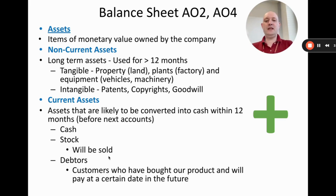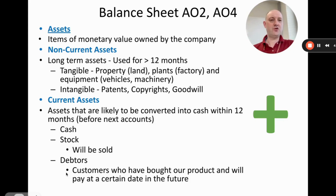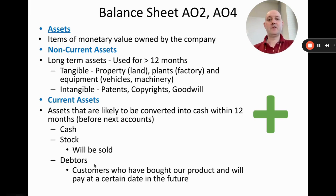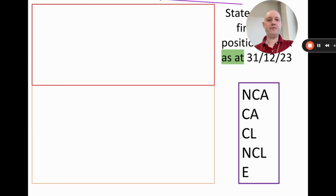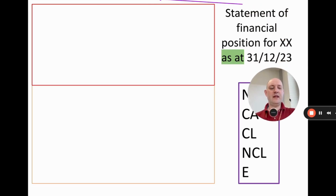Debtors are customers who have bought our product and will pay us at a later date — effectively customers we've given trade credit to, say 30 to 90 days. They've bought our product but haven't paid yet, so it's a current asset because these debts will become cash within 12 months. Assets effectively represent a plus on the balance sheet because they're things we own which give value to the business.